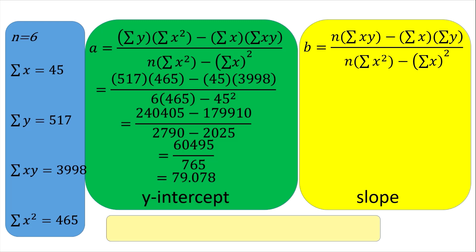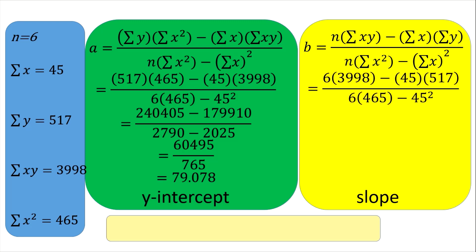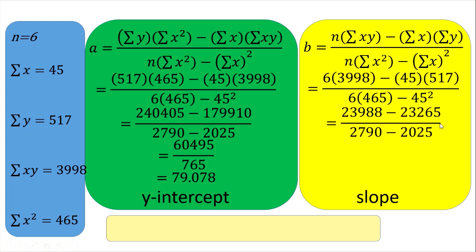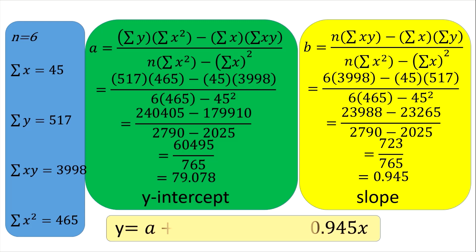Now let's compute the slope b. With n equal to 6, summation of xy equal to 3998, summation of x equal to 45, and summation of y equal to 517, the denominator is the same as for a. Using a calculator, we get 723 divided by 765, so our slope b is 0.945. Thus, the equation of the regression line is y equals 79.078 plus 0.945x.